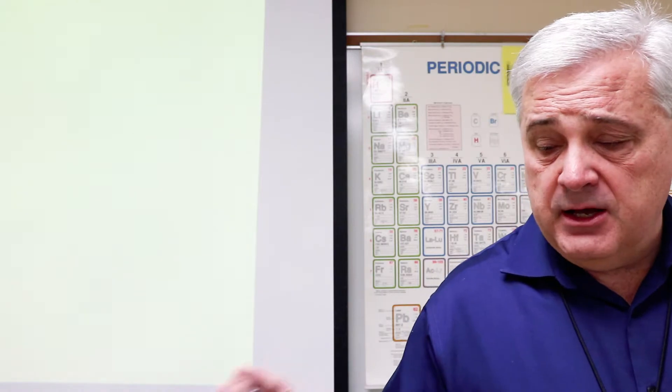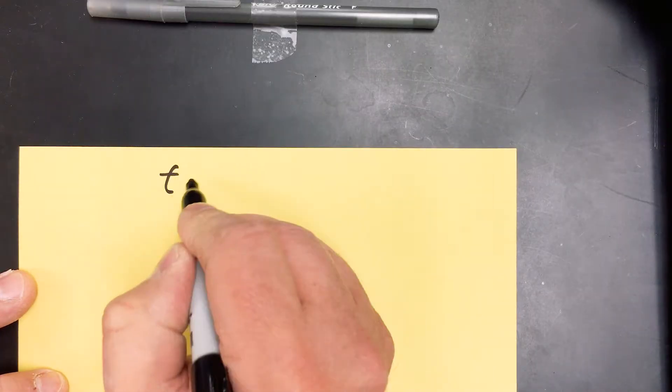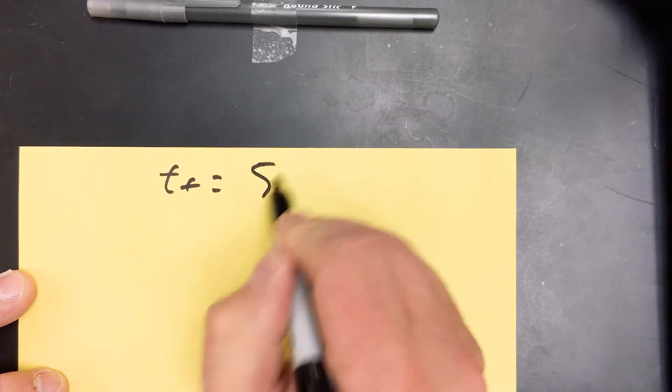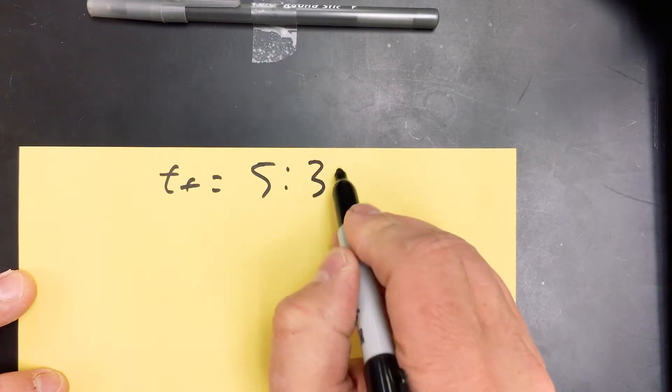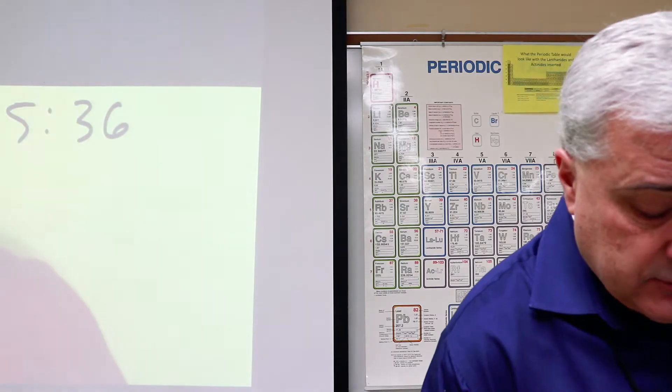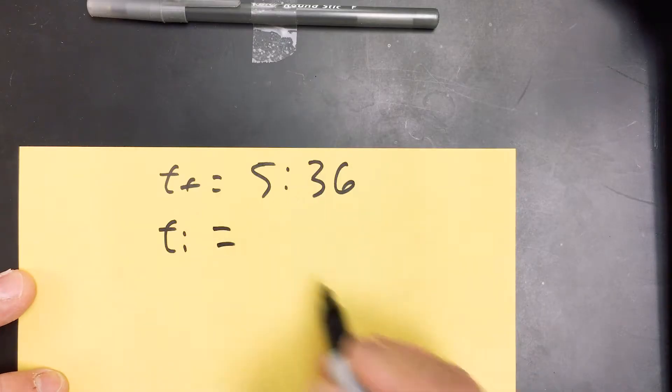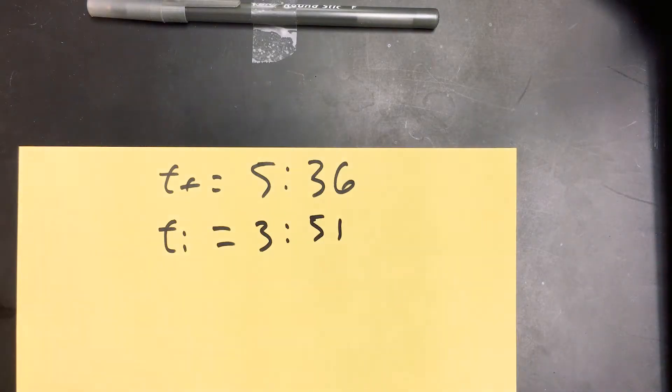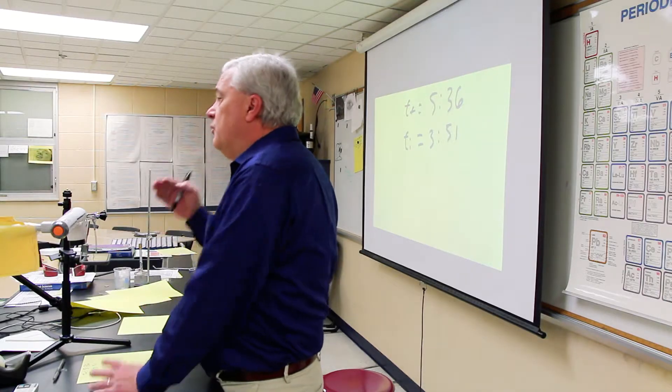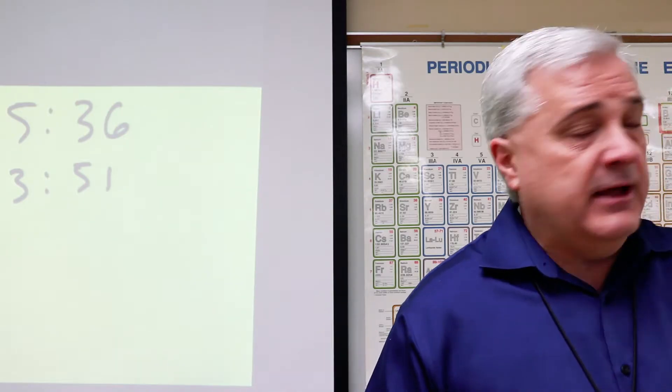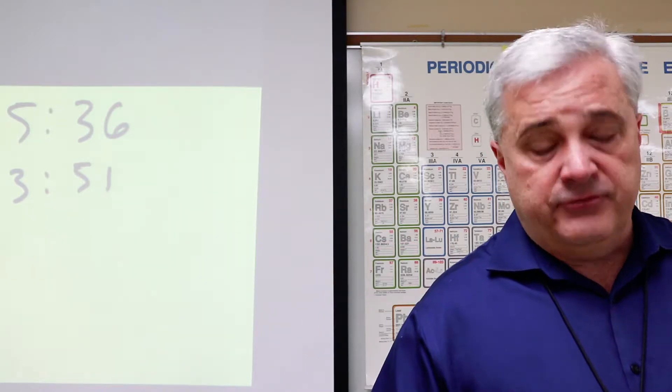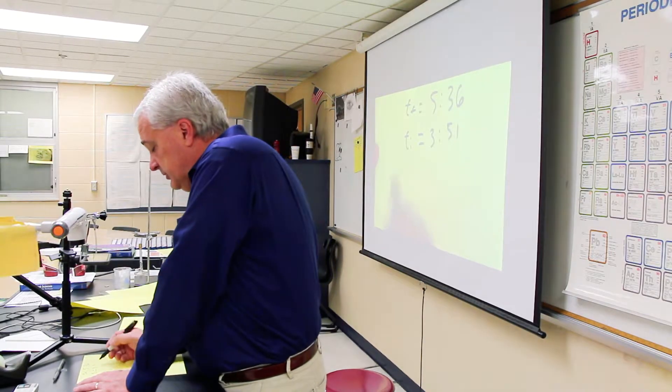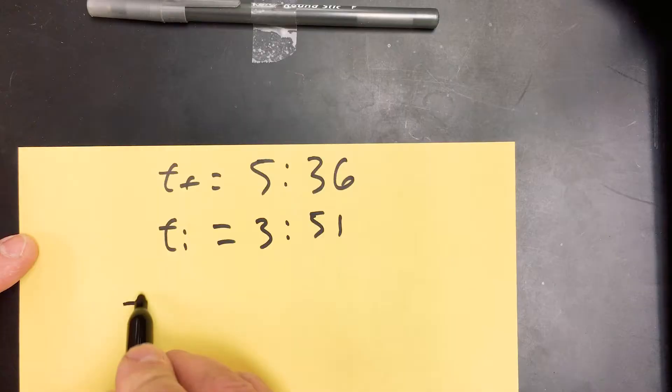So let's do another example, borrowing minutes across the colon. We'll start off by writing down what's given. Write down T sub F is 5 minutes and 36 seconds. And we'll say that T sub I is 3 minutes and 51 seconds. Now, the steps for solving any math problem ever is write down what's given, write down the relevant formula, and then plug in and solve.